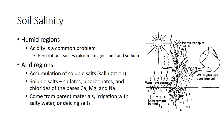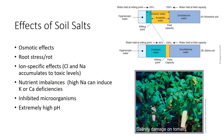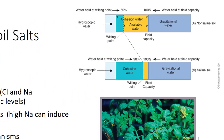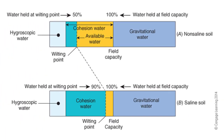The soluble salts of greatest concern in the soil are sulfates, bicarbonates, and chlorides of the bases calcium, magnesium, and sodium. These salts may come from parent materials, irrigation with salty water, or even de-icing salts. In salted soils, salts cause a number of problem conditions. Primary among these are osmotic effects. In non-saline soil, about half the water held at field capacity is available to plants. In saline soil, as little as 10% may be available because of osmotic potential.